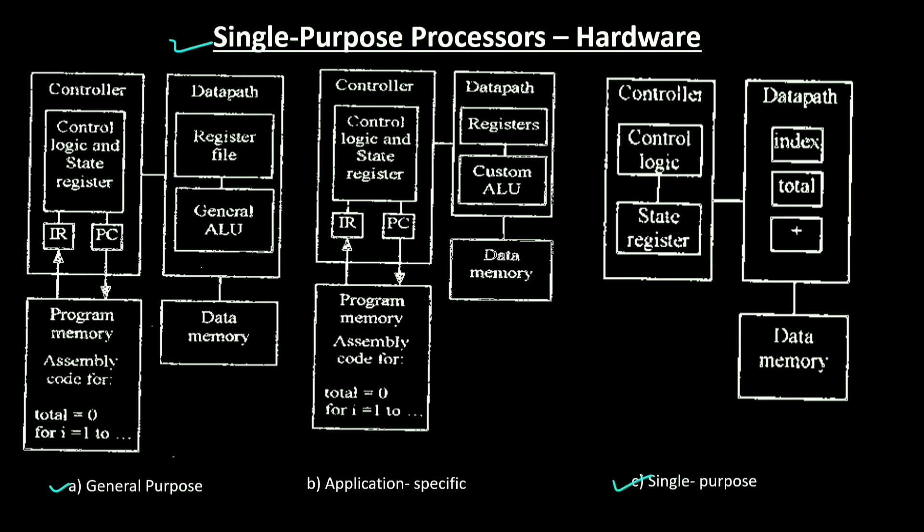Figure C illustrates the architecture of such a single-purpose processor. For example, the data path contains only the essential components for this specific program. Since the processor only executes this one program, we hardware the program instructions directly into the control logic and use a state register to step through those instructions. So no program memory is necessary.